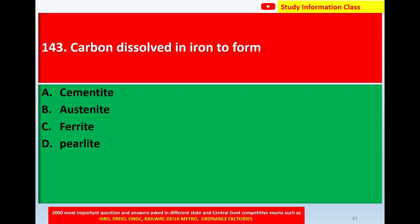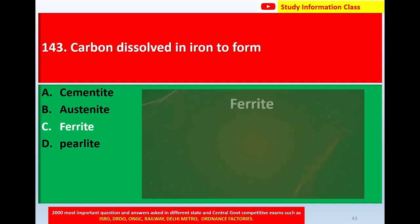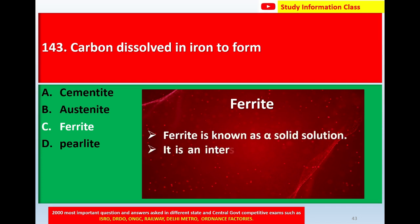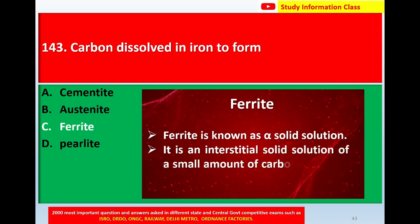Question number 143: Carbon dissolved in iron to form — Option A: cementite, Option B: austenite, Option C: ferrite, Option D: pearlite. The correct answer is Option C, ferrite. Ferrite is known as alpha solid solution — it is an interstitial solid solution of a small amount of carbon dissolved in alpha BCC iron. So for question 143, the correct answer is Option C, ferrite.